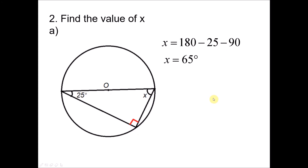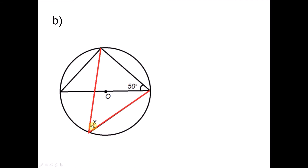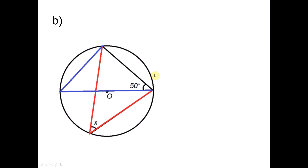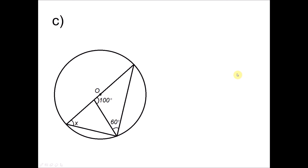Question 2B: X is subtended by a minor arc, and another angle formed by the red lines is subtended by the same arc, so that angle also equals X. Looking at the yellow triangle, the angle subtended by the diameter is 90°. Therefore X equals 180° minus 90° minus 50°, giving X equals 40 degrees.